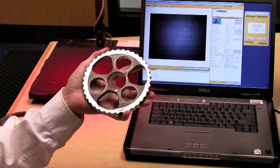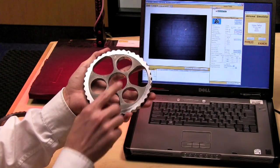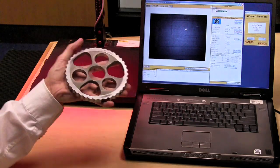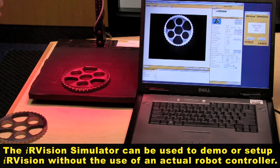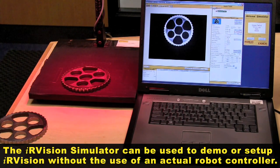To show the emphasis area, I'm going to use this part that has a tick mark on one side and not the other. The IR Vision simulator is an ideal way to demo or set up IR Vision without the use of an actual robot controller.